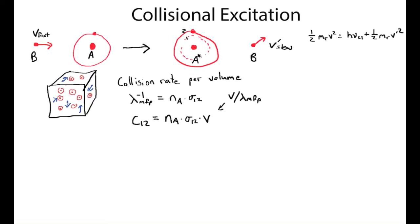To get the number of transitions per unit volume, we also need to consider how many B particles are present. So we multiply by the number density of B, giving N_B times N_A times the collisional cross-section times the relative velocity, which has units of collisions per time per unit volume.